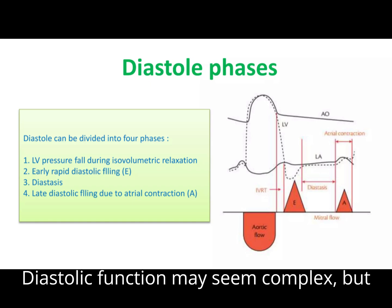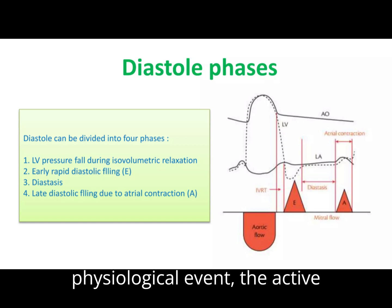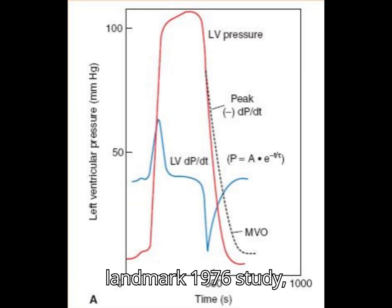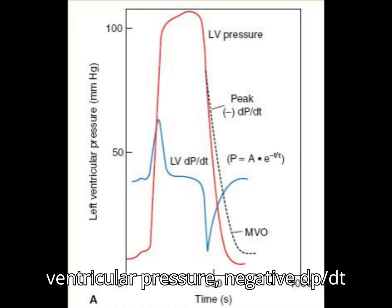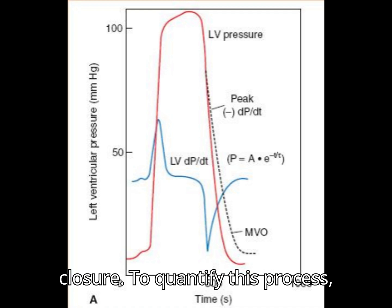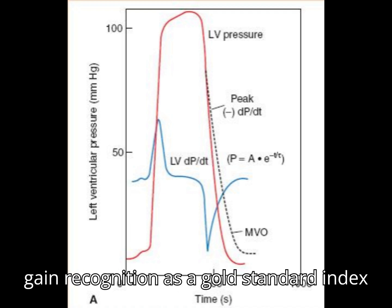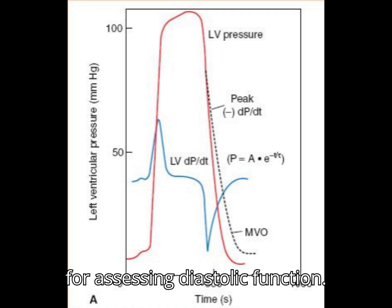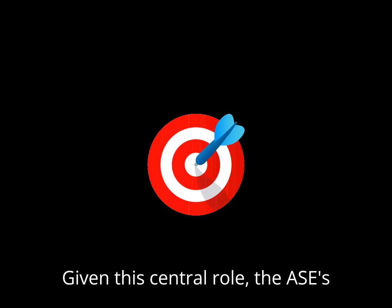Diastolic function may seem complex, but at its core lies a fundamental physiological event: the active relaxation of the left ventricle. In his landmark 1976 study, Dr. Weisfeld demonstrated that the maximum rate of decline in left ventricular pressure — negative dP/dt max — occurs shortly after aortic valve closure. To quantify this process, he introduced tau, the left ventricular diastolic time constant, which quickly gained recognition as a gold standard index for assessing diastolic function.